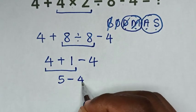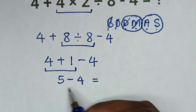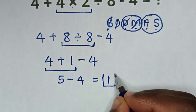Then subtract 4. So 5 - 4 = 1. Therefore, this is our final answer.